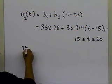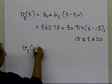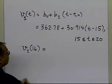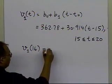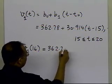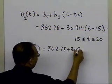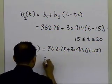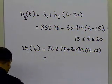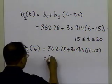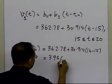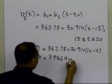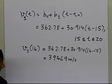We're interested in the approximate velocity at t=16, which we obtain by substituting: V₁(16) = 362.78 + 30.914(16 - 15) = 393.69 m/s. That's our approximation.